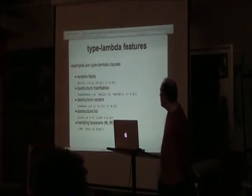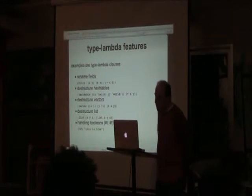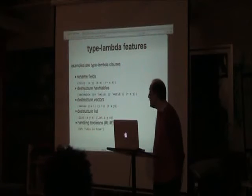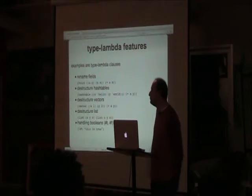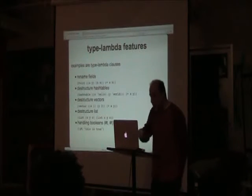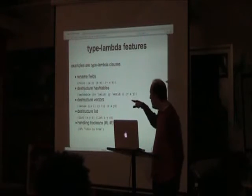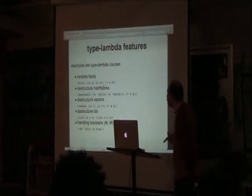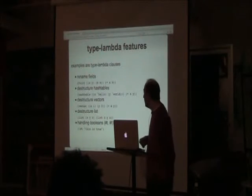Some features of the type-lambda macro: first, you can rename fields. This is useful when you already have a variable called a in your code and don't want to shadow it. For example, field y maps to variable a, field x maps to variable b, and then you add them together.